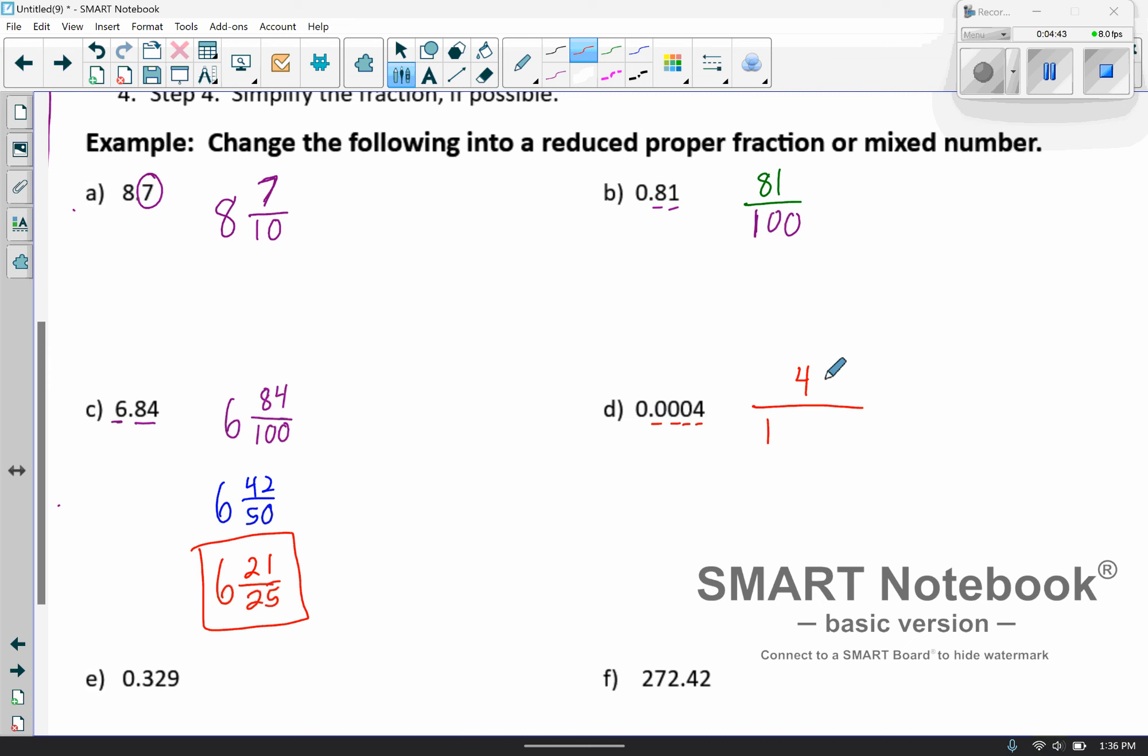Okay, once again, we can reduce this. And if you want to do this all in one step, that's fine. But once again, I'm just going to kind of do it in bite-sized pieces. I notice they're both even, so I'll cut them in half. So half of 4 is 2, and half of 10,000 would be 5,000. And then I notice that they're still even, so I can cut them in half one more time. And so then this will be 1 over, and then half of 5,000 right here is going to be 2,500. And there we go.